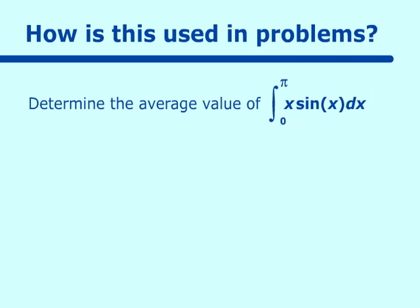We have a question here. Determine the average value of the integral from 0 to pi of x sine x dx. Well, we know the average value is the height. And that's equal to 1 over b minus a.